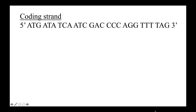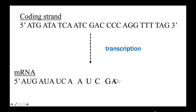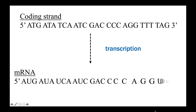Now let's take another example. You are given the sequence of a gene, and it is made clear that the sequence is the coding strand. What will be the sequence of the mRNA produced following transcription? You can pause this video to figure it out. Since the given DNA sequence is the coding strand, and as we discussed, the mRNA is the same as the coding strand, after transcription the mRNA will be the same as the sequence given, except that all the T's are replaced by uracil. So the mRNA sequence will be 5' AUG AUA UCA AUC GAC CCC AGG UUU UAG 3'.